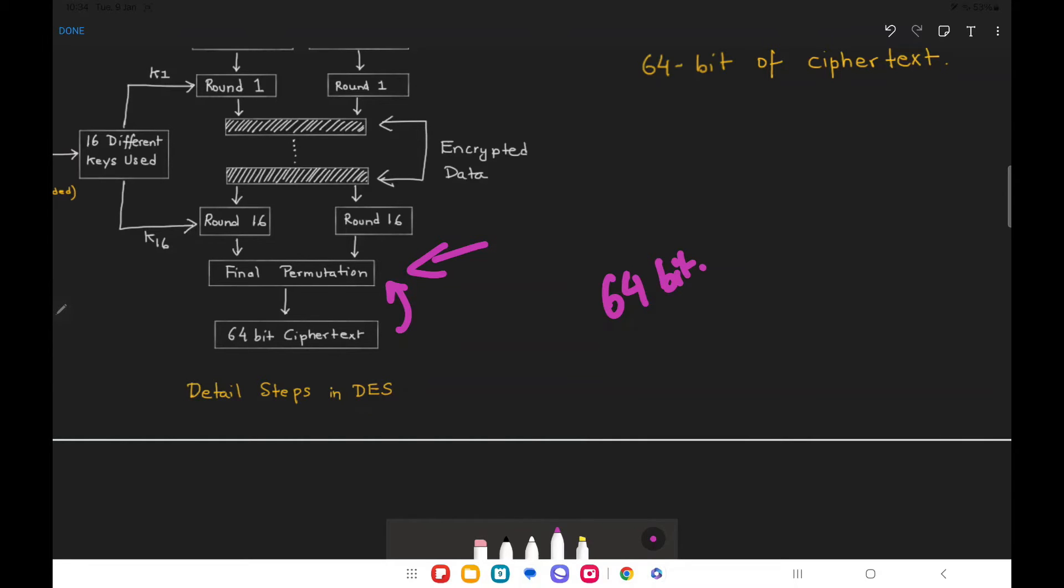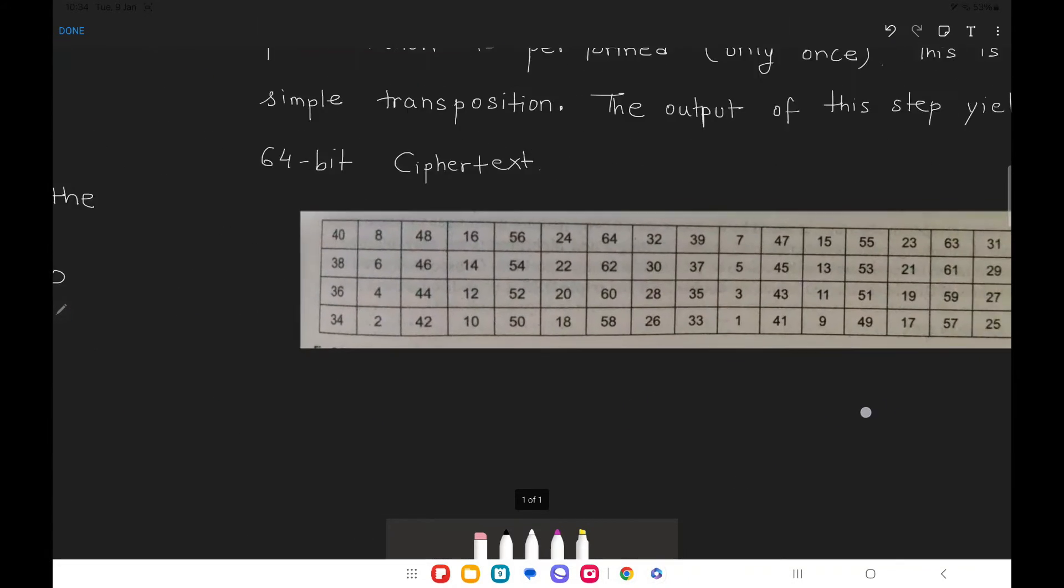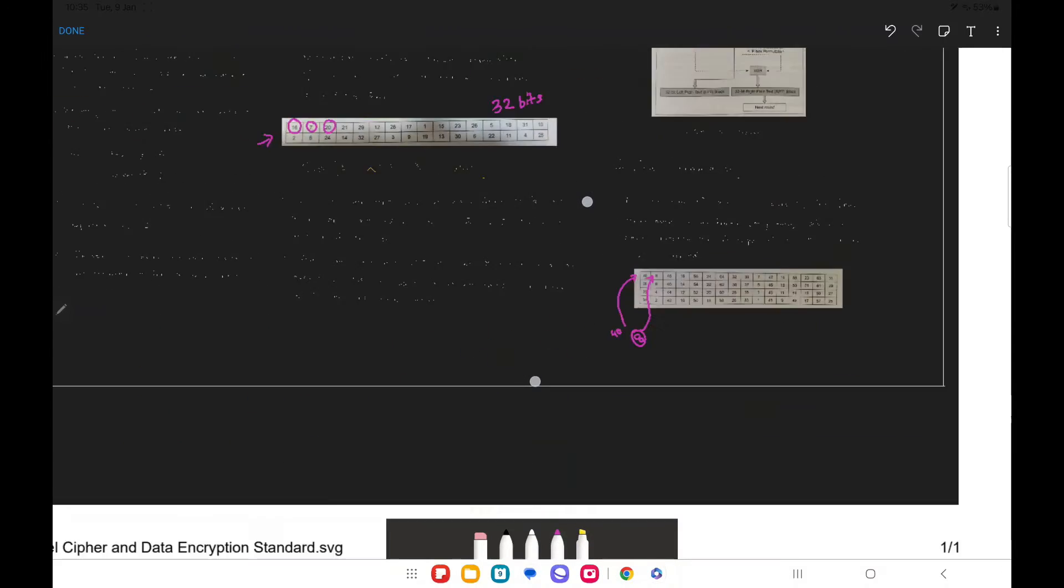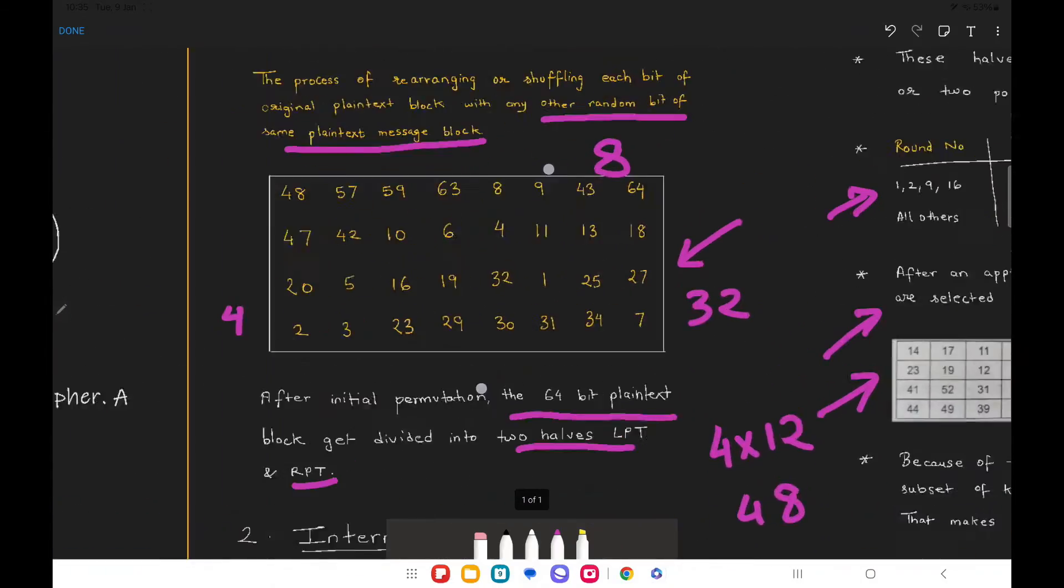Okay so for that to happen we are going to refer to this table, the final permutation table. What is happening over here? The 40th bit of the ciphertext goes to the first bit of the final ciphertext. Similarly the eighth bit of the ciphertext goes to the second position of the final ciphertext and so on. So this is quite similar to what we have seen during the initial permutation that is somewhere over here.